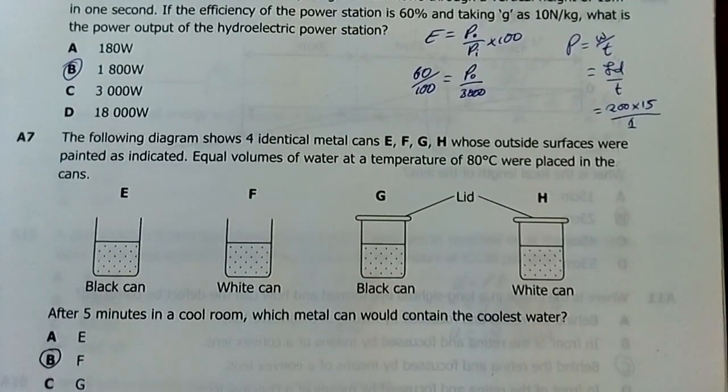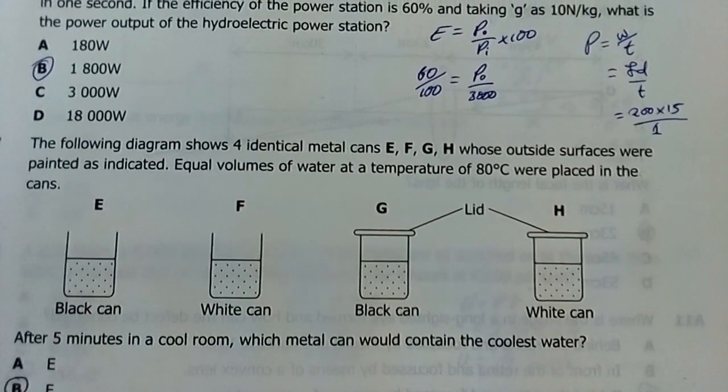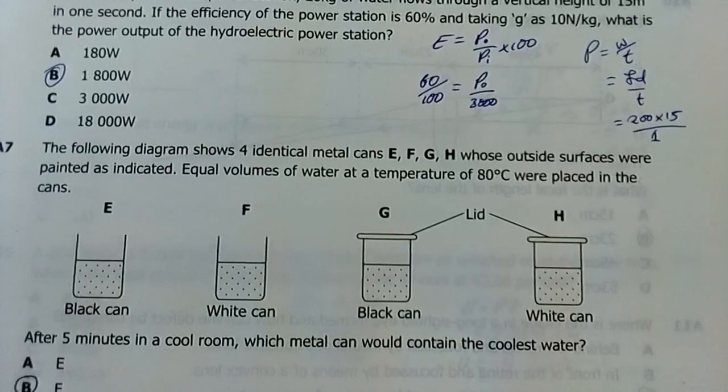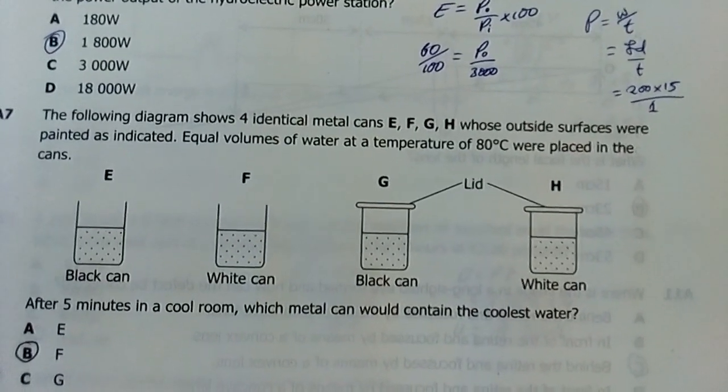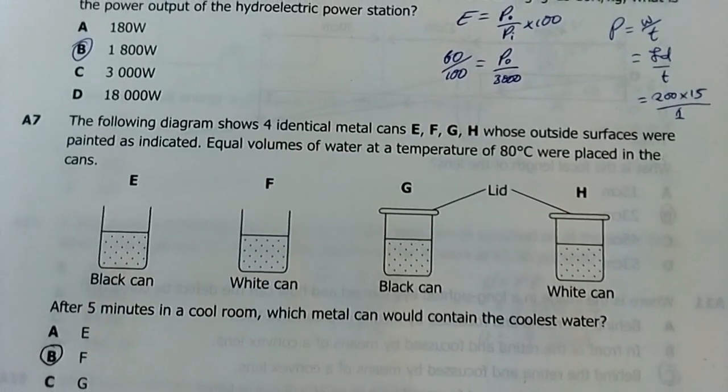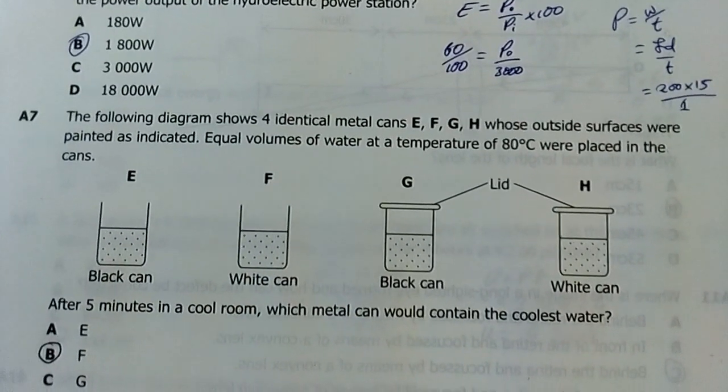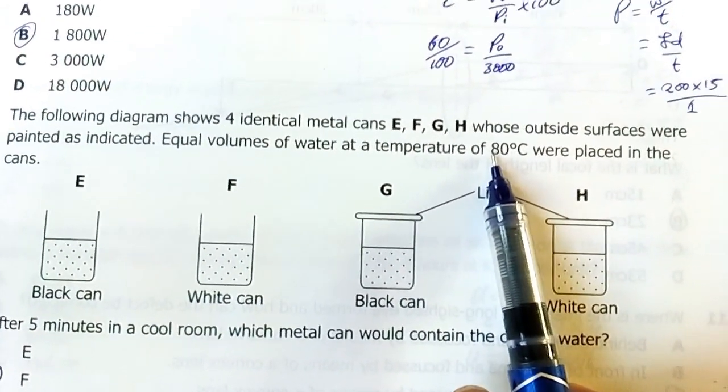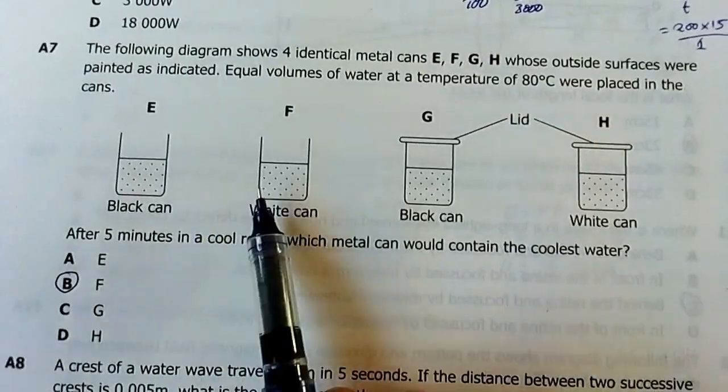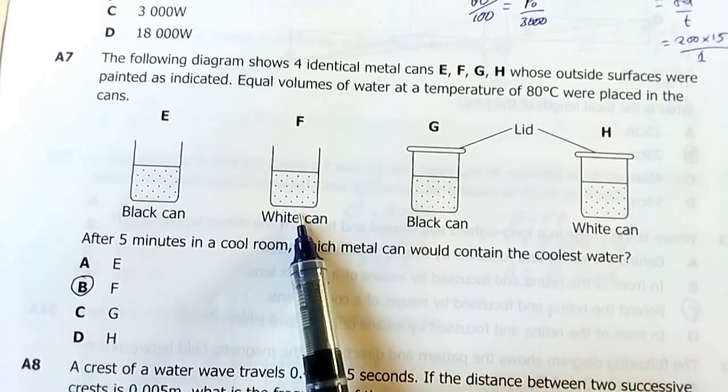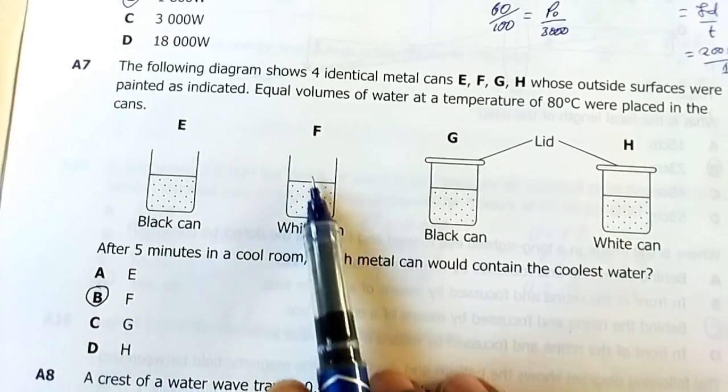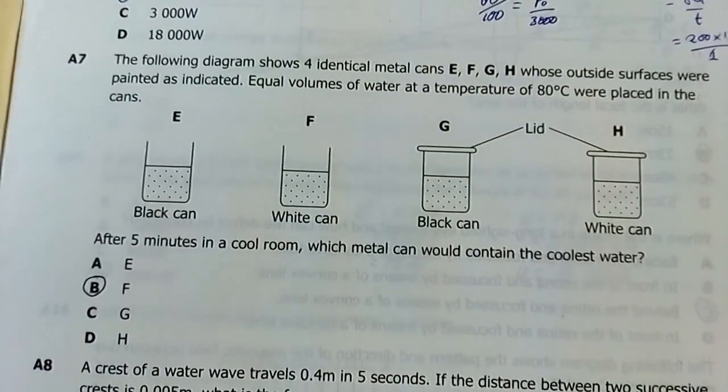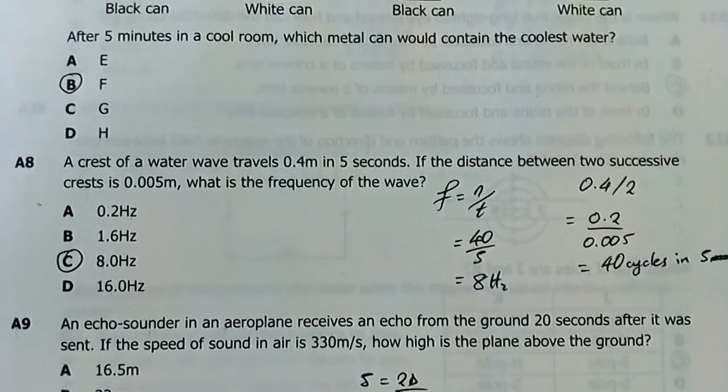Number seven: The following diagram shows four identical metal cans E, F, G, H whose outside surfaces were painted as indicated. Equal volumes of water at a temperature of 80 degrees celsius were placed in the cans. After five minutes in a cool room, which metal can would contain the coolest water? The initial temperature was 80 degrees celsius. My answer is F. F is white. White reflects heat, therefore this water will not absorb any heat but instead will radiate much of it and lose much of it via evaporation.